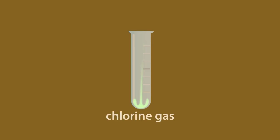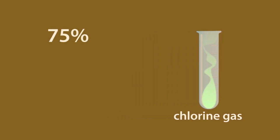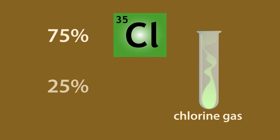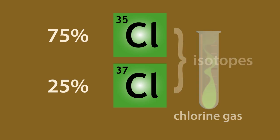For a sample of chlorine gas, we can estimate that 75% of the atoms would be chlorine-35 and the remaining 25% would be chlorine-37. These different forms of an element are known as isotopes.